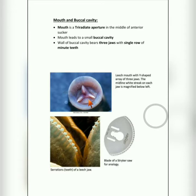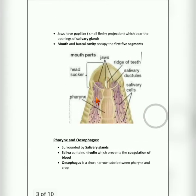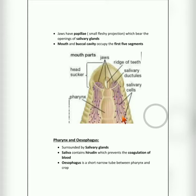The mouth is situated in the middle of the anterior sucker, and it leads to a buccal cavity. The jaws have small papilla-like structures — papilla means tiny fleshy projections. The salivary glands open through these papillae. These salivary glands are located around the pharynx and esophagus, and they open at the jaw region. The mouth and buccal cavity are found in the first to fifth segments.